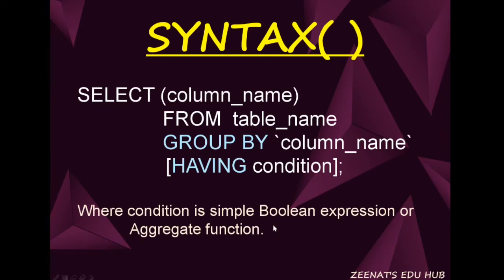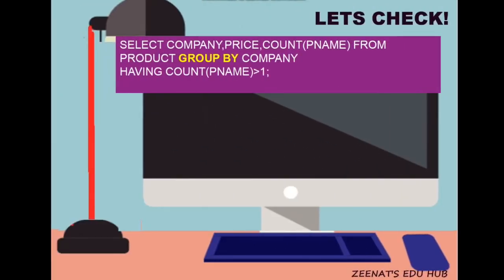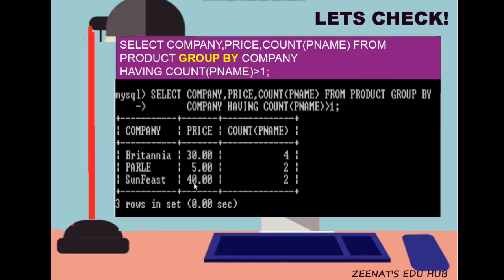Let's check the following query: SELECT company, price, COUNT(p_name) FROM product GROUP BY company HAVING COUNT(p_name) > 1. After SELECT, company and price are two column names, and the third column is the aggregate function COUNT. Records are grouped by company based on the condition that a company should have more than one product. You can see that only three rows are displayed, as three companies — Britannia, Parley, and Sunfist — have more than one product.